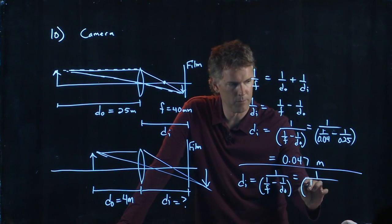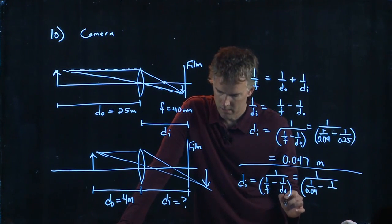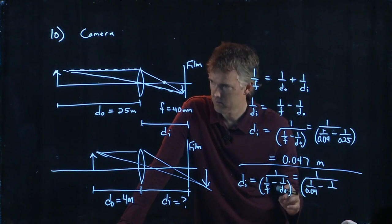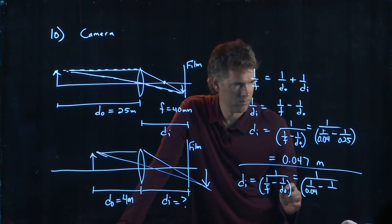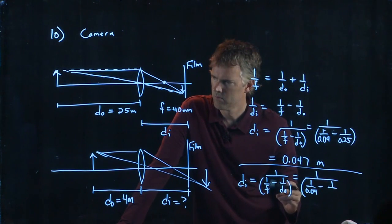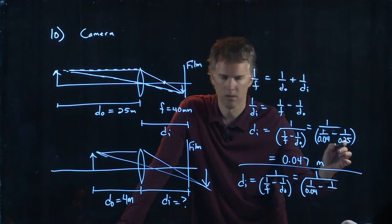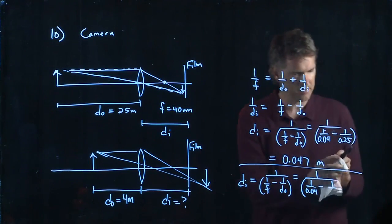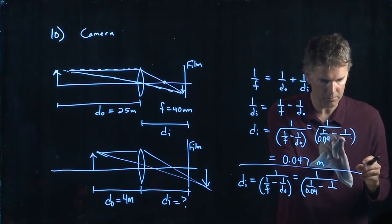So we have 1 over 0.04 minus 1 over, I think we messed this up, didn't we? Yeah, I thought that was centimeters. That's not centimeters, that's meters. This was not 0.25, this was 25.